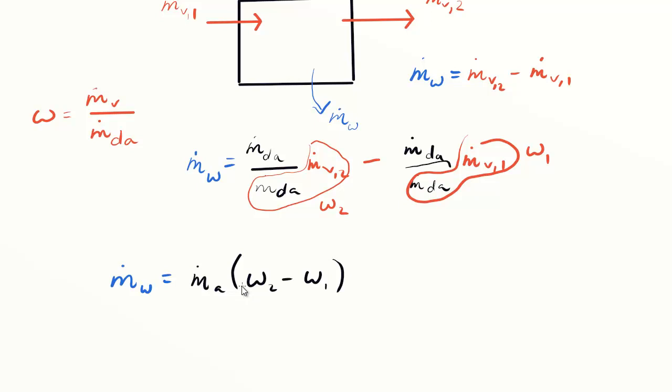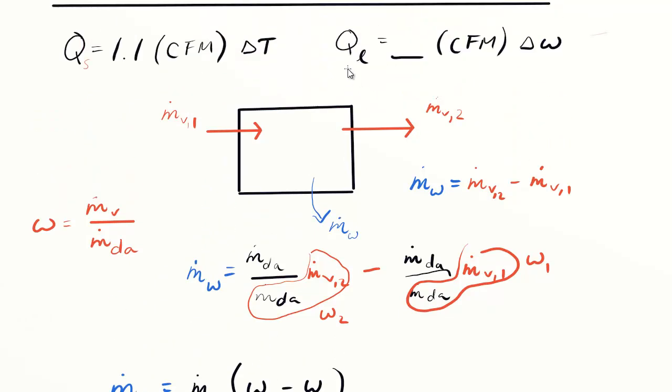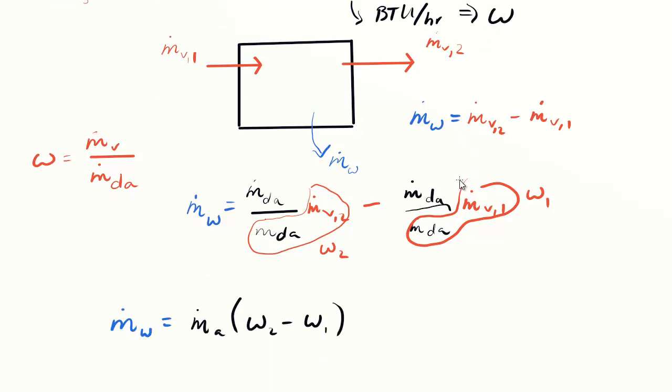Now we want a shorthand formula that gets us a heat load in units of BTU per hour, or in SI, watts. We need a factor that takes this from units of pounds to our heat transfer units. What we need is the latent heat of vaporization or condensation. If we multiply by that, we get BTU per pound mass multiplied by pound mass per hour, which gives us BTU per hour.